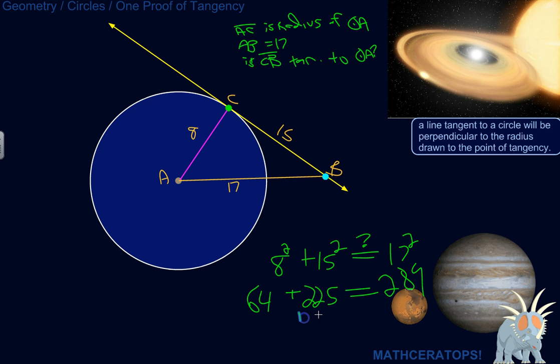So let's just add the 64 down here. 5 plus 4 is 9, 6 plus 2 is 8, 2 plus nothing is 2. So yeah, 289 is equal to 289.